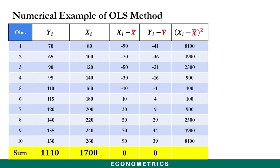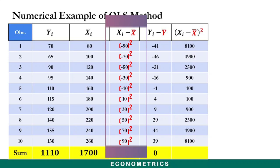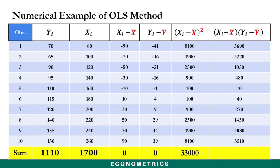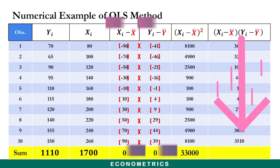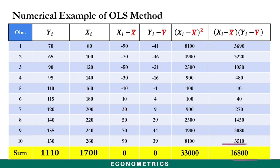We expand the column to include the square of the deviation of x. We square each value of the deviation of x and sum them, getting the sum of the squared deviations of x to be 33,000. We also expand the column to include the product of the deviations of x and y, and when we sum those values we get 16,800.